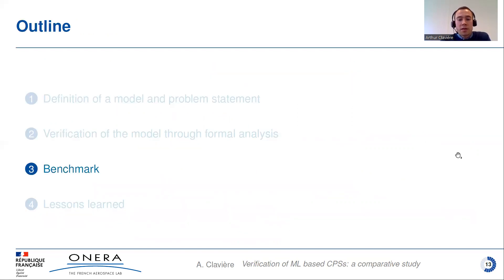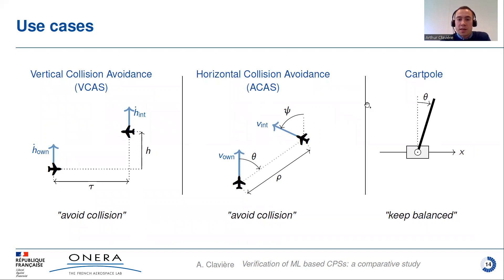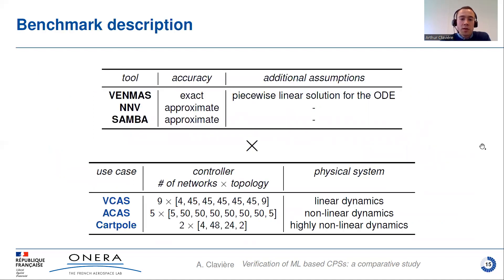To evaluate these tools, we built a benchmark based on three use cases: the ACAS that I already presented; the VCAS, which is quite similar to the ACAS except that the aircraft evolve in a vertical plane; and the cartpole, which is an inverted pendulum on a moving cart, where the property of interest is to keep the cartpole balanced — that is, to keep the theta angle close to zero. The benchmark consists of the cross-product of the tools and these three use cases, which present different degrees of complexity in terms of verification, depending on the number of possible commands, the number and size of the neural networks used, and the nature of the dynamics, which can be linear or non-linear.